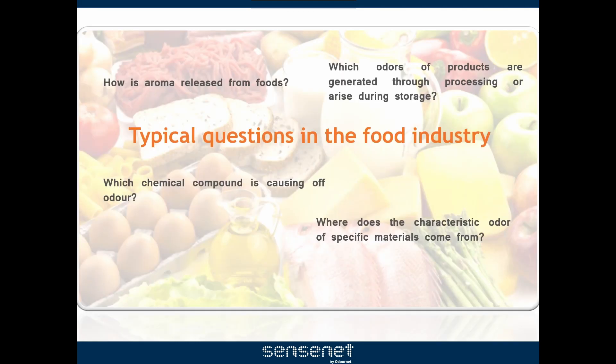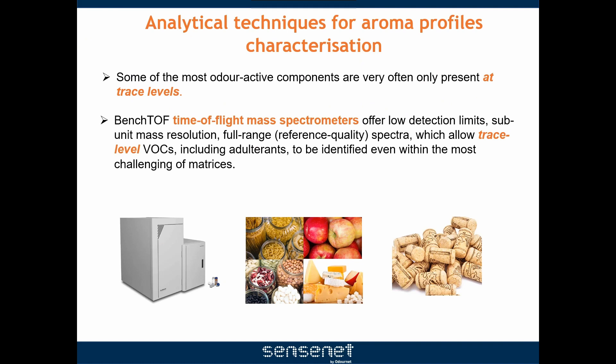Some key questions in the food industry are: how is aroma released from foods? Which odors of products are generated through processing or arise during storage? Which chemical compound is causing off-odors? Where do the characteristic odors of specific materials come from? The components that make up the aroma profiles of food are typically present over a wide concentration range, although some of the most active compounds are very often only present at trace levels.